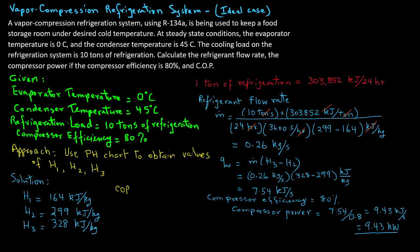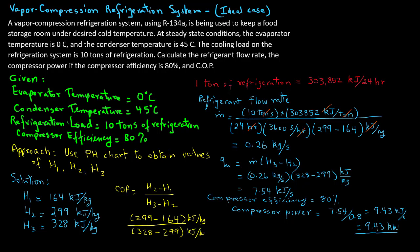The coefficient of performance (COP) is calculated as (H2 minus H1) divided by (H3 minus H2). With values of (299 minus 164) in the numerator and (328 minus 299) in the denominator, the COP equals 4.66. Note that the coefficient of performance for vapor compression systems usually varies between 4 and 6, so our value of 4.66 makes sense.